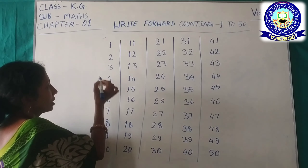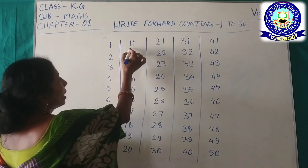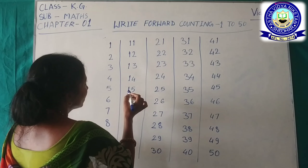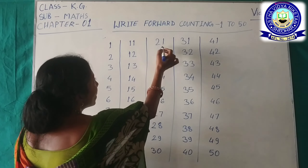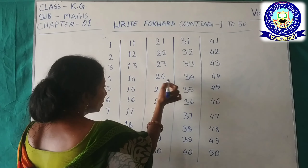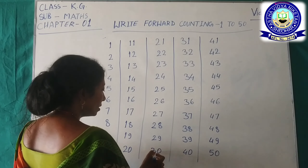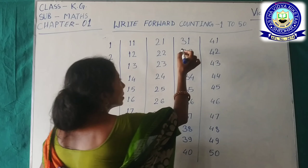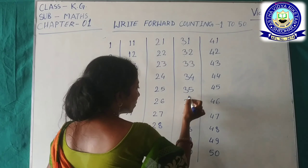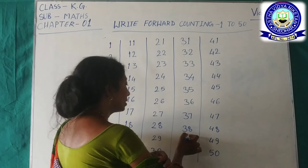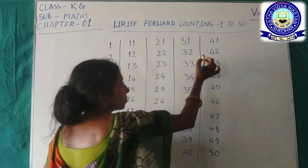चलो एक बार और स्कूम रिपीट करते हैं — 1, 2, 3, 4, 5, 6, 7, 8, 9, 10, 11, 12, 13, 14, 15, 16, 17, 18, 19, 20, 21, 22, 23, 24, 25, 26, 27, 28, 29, 30, 31, 32, 33, 34, 35, 36, 37, 38, 39, 40. (Let's repeat once more — 1 through 40.)